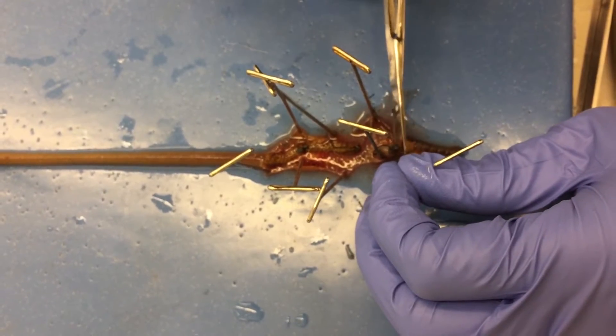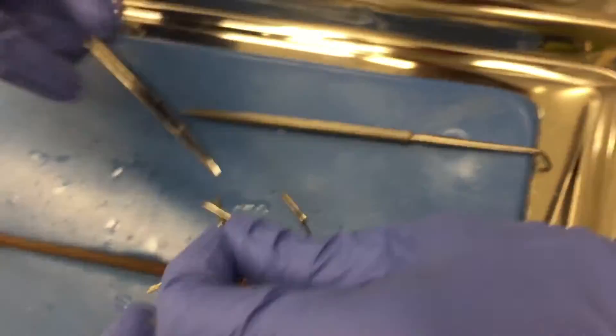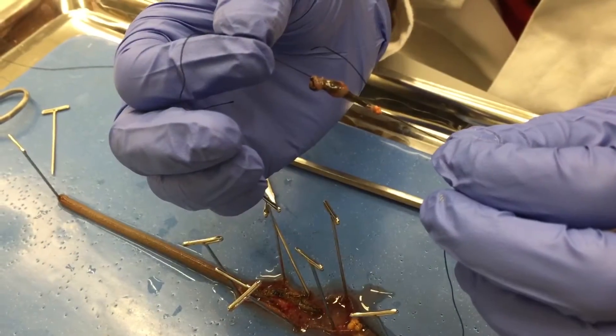Cut the intestine on either side of the suturing string so that you can remove the crop and gizzard from the rest of the worm.